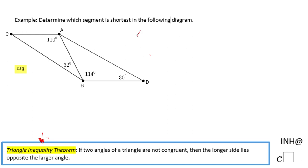In order to use this theorem, we need to find all the angles. First, I'm going to find angle C. The sum of the interior angles of a triangle is 180, so I'm going to write 110 (measure of angle CAB) plus 32 (measure of angle ABC) plus the measure of angle C.